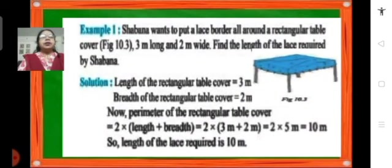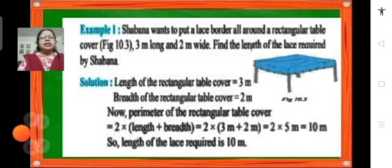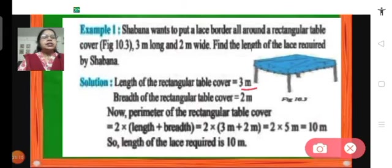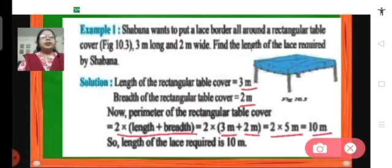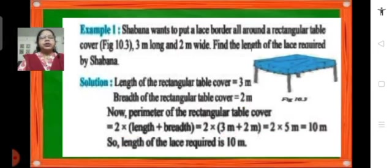Let us look at one more example. Shabana wants to put a lace border all around a rectangular table cover which is 3 meters long and 2 meters wide. Find the length of lace required. The length is 3 meters and the breadth is 2 meters. The perimeter will be 2 into (length plus breadth) — that is 2 into (3 meters plus 2 meters), which is 2 into 5 meters, equal to 10 meters. So the perimeter of this rectangular table cover is 10 meters, and that is the length of lace required.